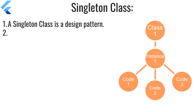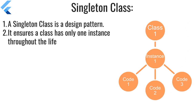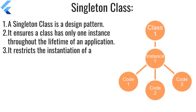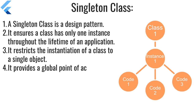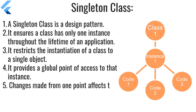On the other hand, a singleton class is a design pattern that ensures a class has only one instance throughout the lifetime of an application. It restricts the instantiation of a class to a single object and provides a global point of access to that instance.